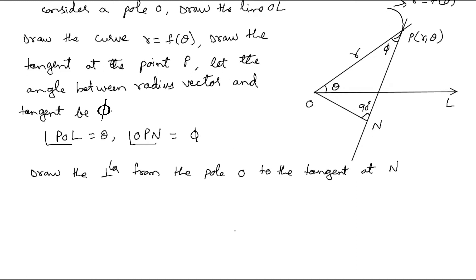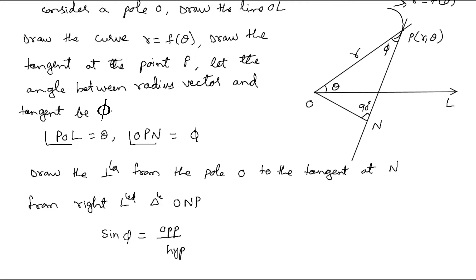Now, considering the right-angled triangle ONP, we will try to find sin φ. With respect to the angle φ, sin φ equals opposite over hypotenuse. The side opposite to angle φ is ON, and the hypotenuse, which is opposite to the 90-degree angle, is OP. So sin φ = ON / OP. We know the value of ON.